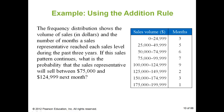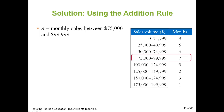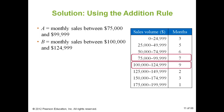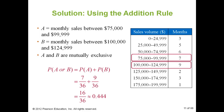Here's another example. A frequency distribution shows the volume of sales and the number of months a sales representative reached each sales level. If the sales pattern continues, what's the probability that the sales representative will sell between $75,000 and $125,000 each month? I look at monthly sales between $75,000–$99,999 and between $100,000–$124,999. Together they make up 7 plus 9, which is 16, out of a total of 36. So the probability is 0.444.